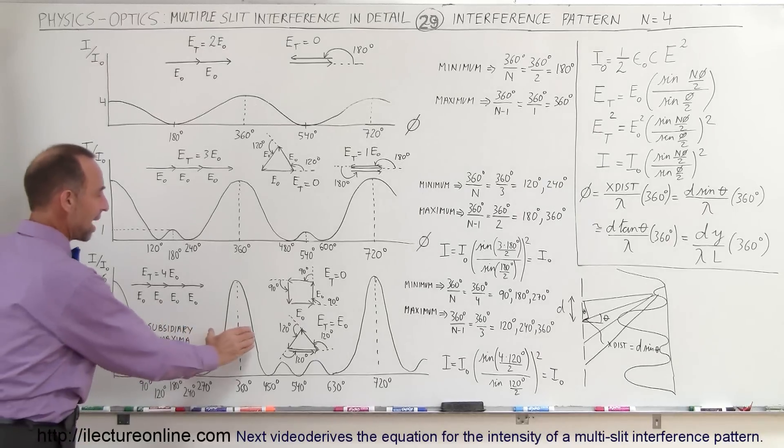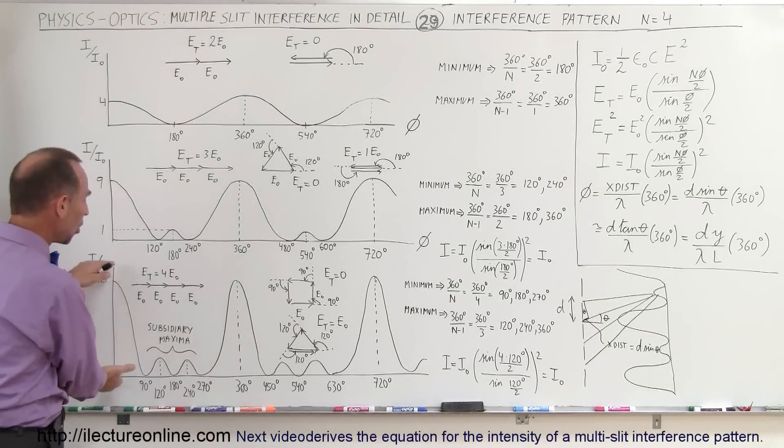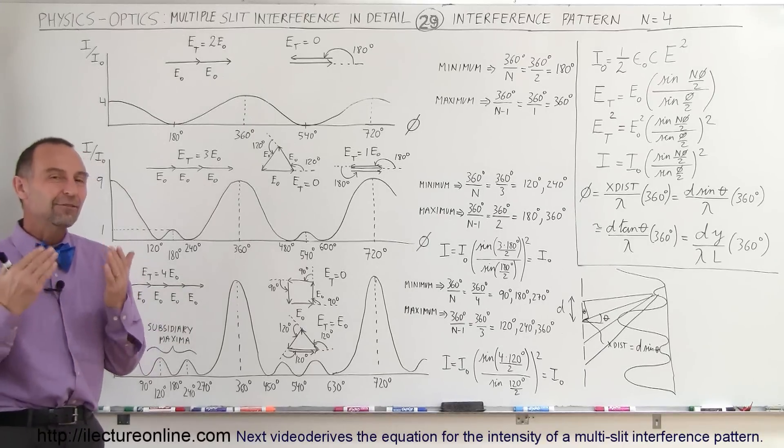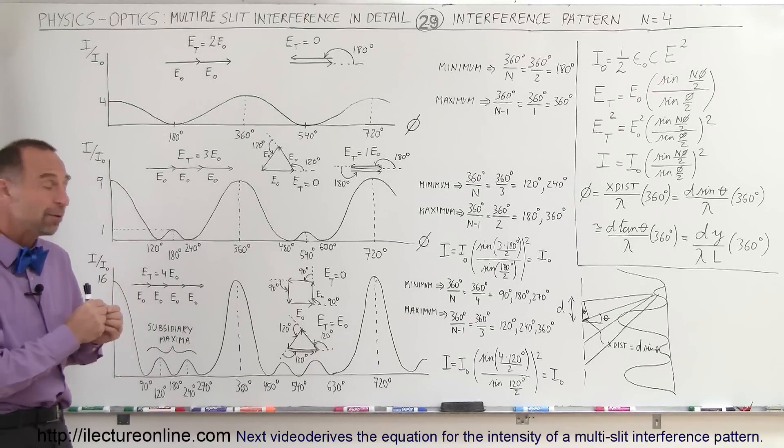Notice that the maxima are now becoming narrower, but they're also becoming taller. In other words, the intensity of each one at the very peak is higher than it was before.